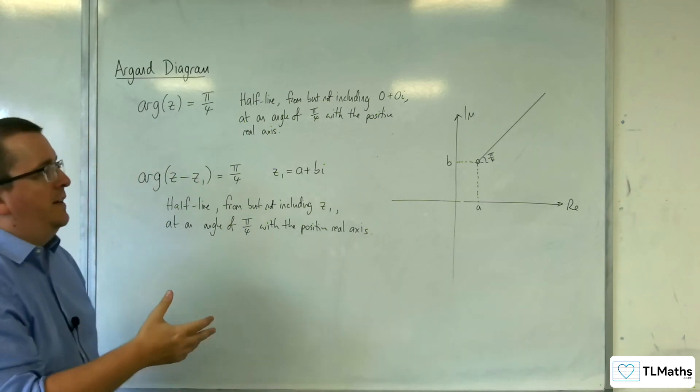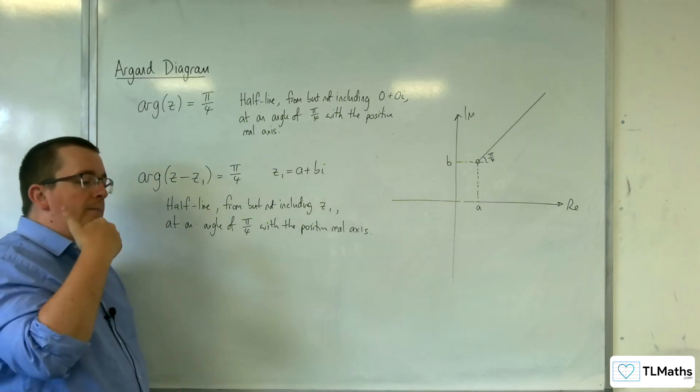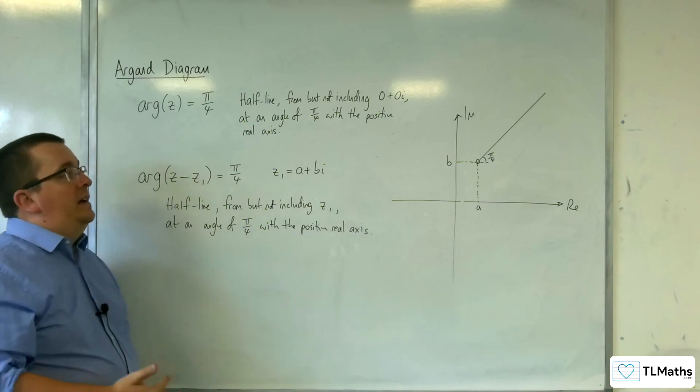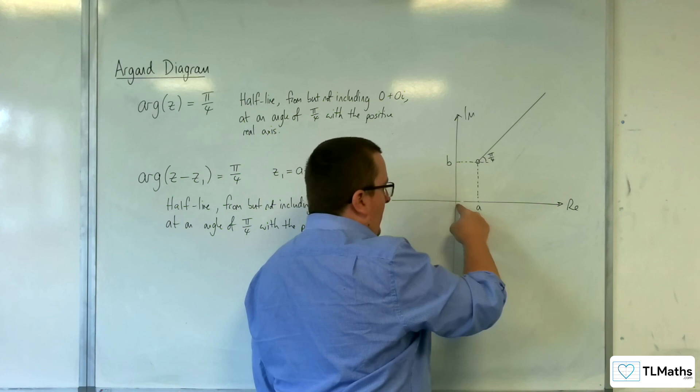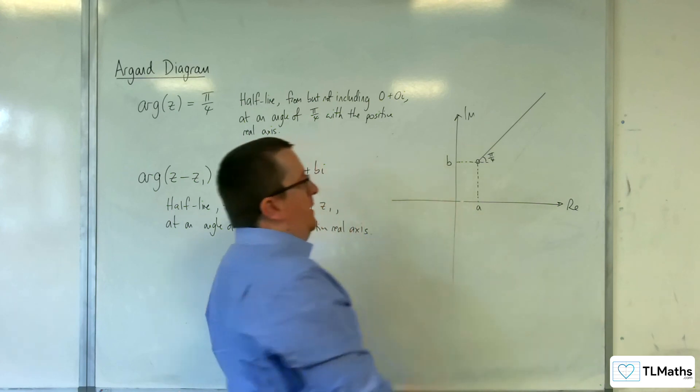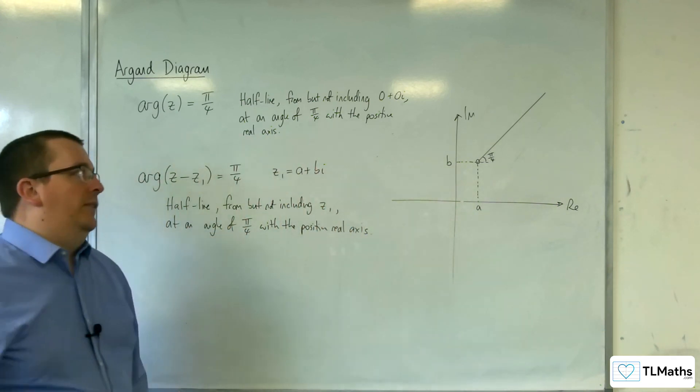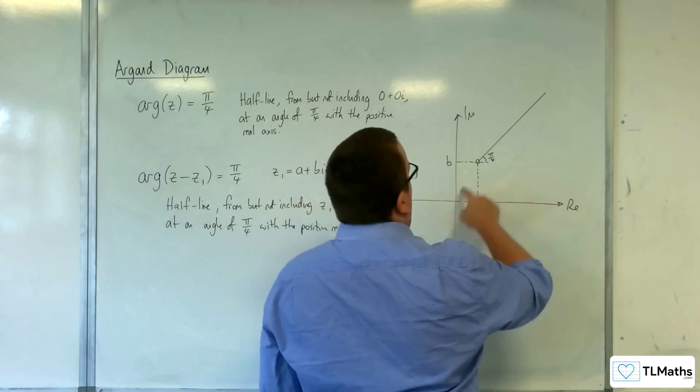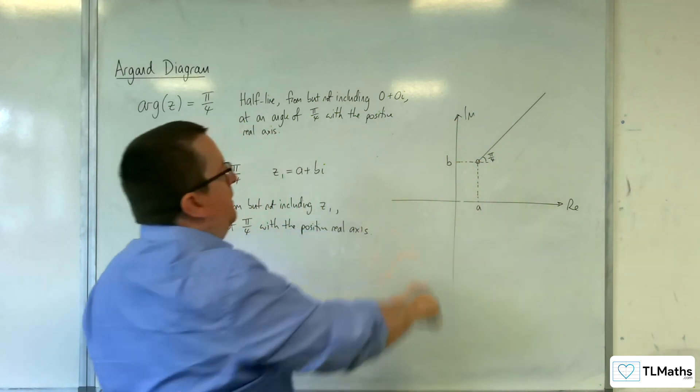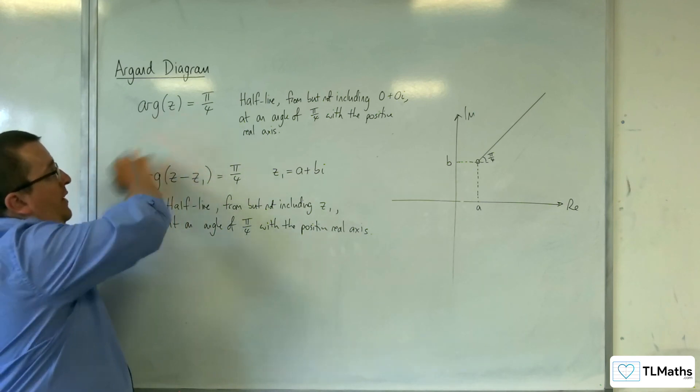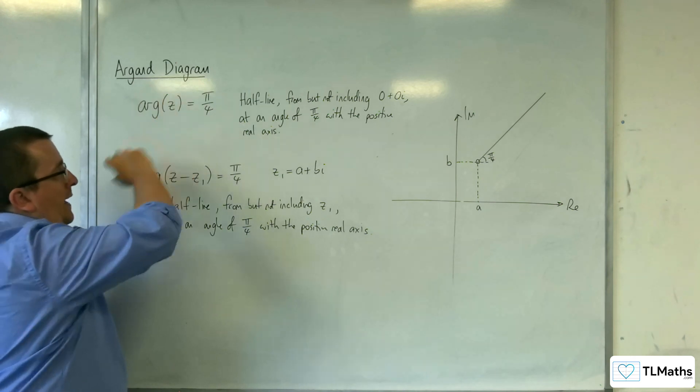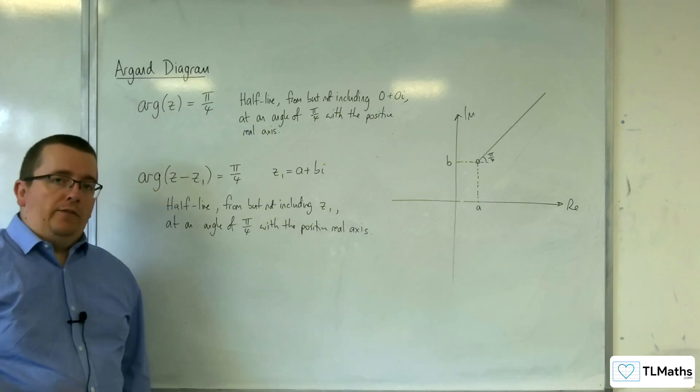So this is what you need to consider. Now, as I said, if the angle that you've got there is negative, then you know that it's actually going to be going down here. It's going to be below the real axis, and if it's positive, then you're up here. And they're the lines that you're going to be able to draw. So when we're talking about the argument of z equaling an angle, we're looking at half lines.